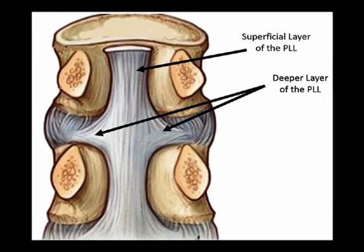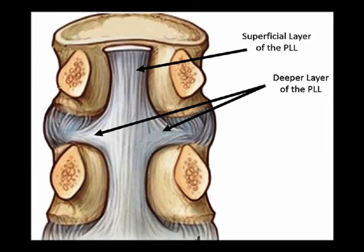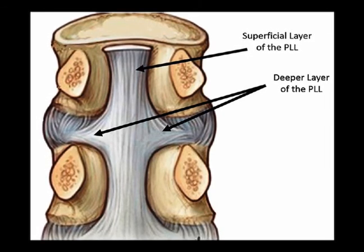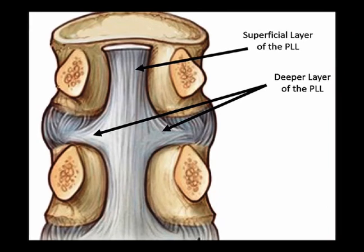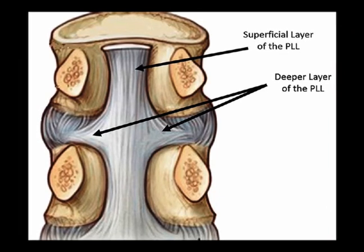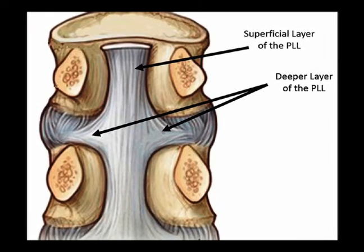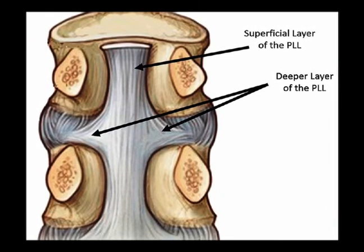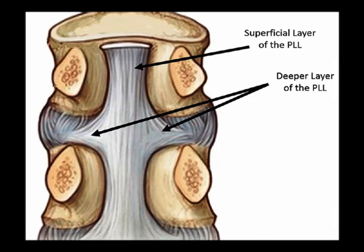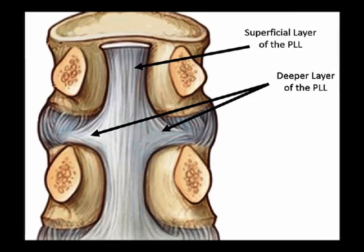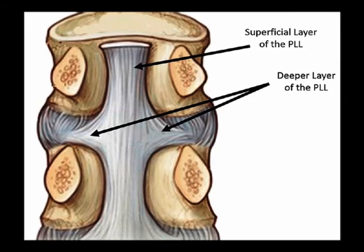The superficial layer is a continuation of the tectoral membrane at C2, and the deep layer is a continuation of the cruciform ligament at the atlas.